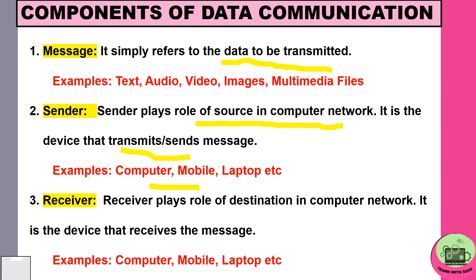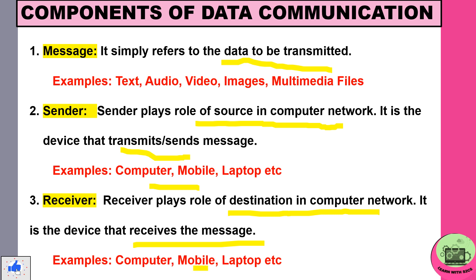Third is receiver. The receiver plays the role of destination in a computer network. It is a device that receives the message. The examples are the same — computer, mobile, etc.